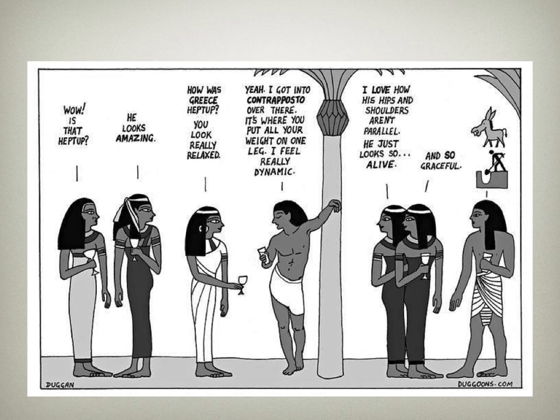I always include a note here about contrapposto. Contrapposto is how the human form naturally tends to stand — we naturally tend to stand with our weight shifted on one side. Therefore part of the body is in tension and part of the body is relaxed. You can see this little cartoon: most ancient Egyptian figures were very straight up and down, and then you can see the figure in the center standing in contrapposto, which makes it seem much more lifelike.